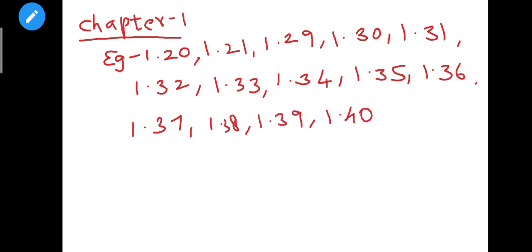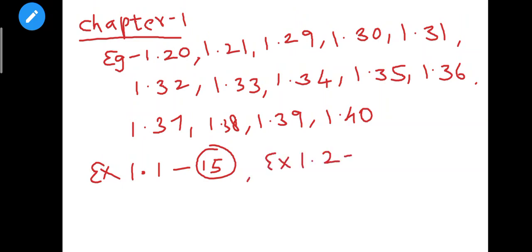So chapter 1 — in this example, the portion is reduced. You can learn how to do that. The next exercise is going to be done. Exercise 1.1 — so chapter 1 in this example has 15 sums, you can learn how to do that. Next, exercise 1.2 is 3 sums.